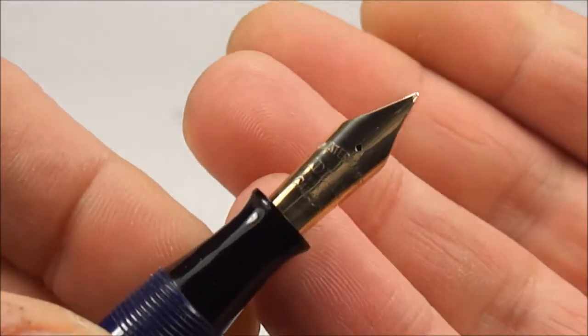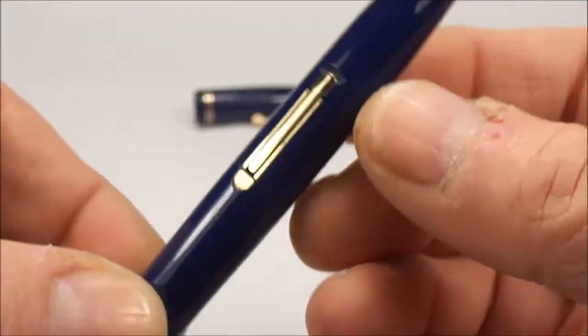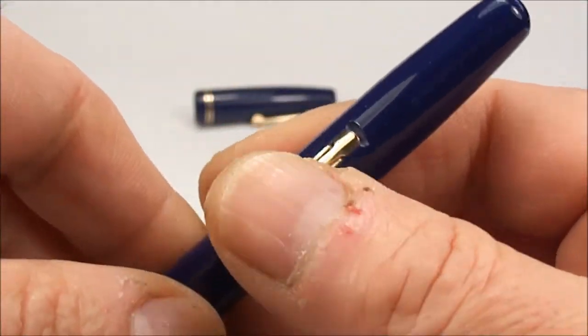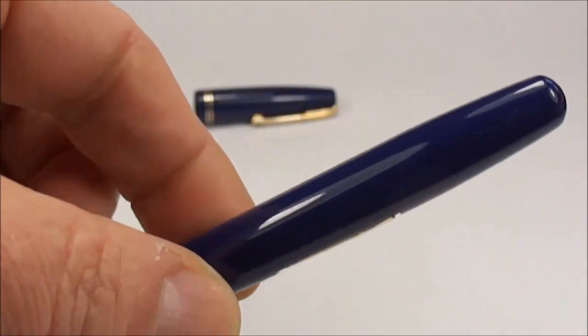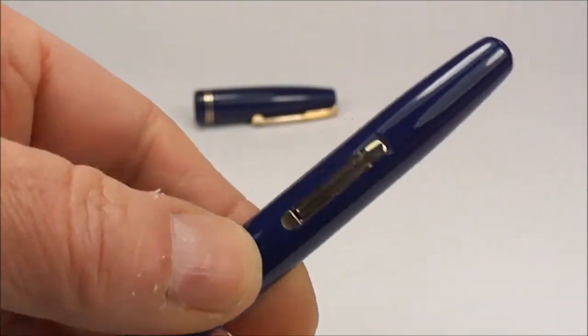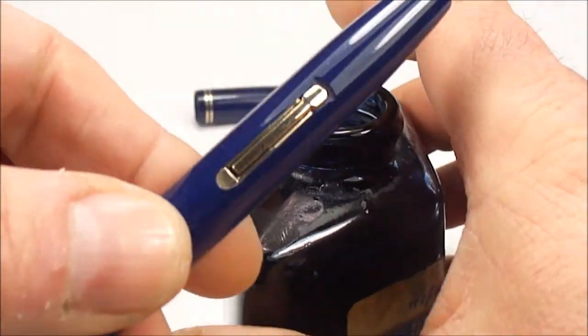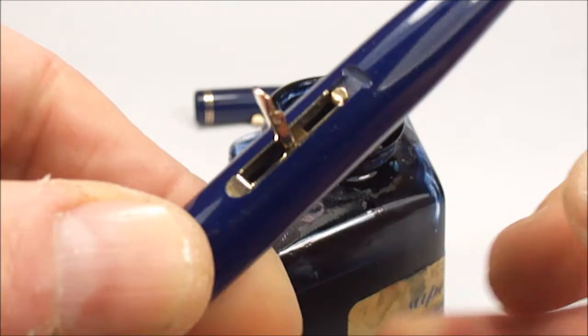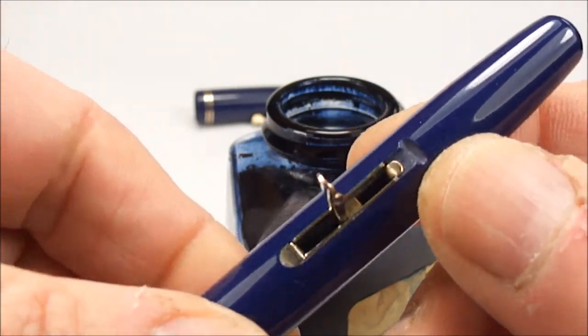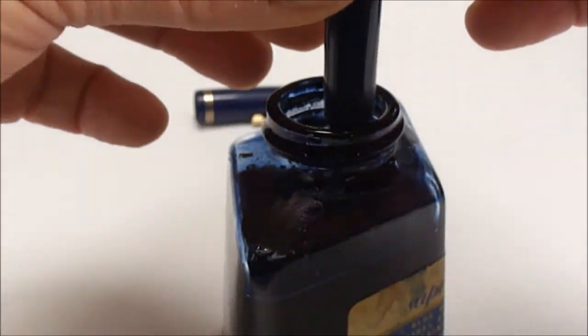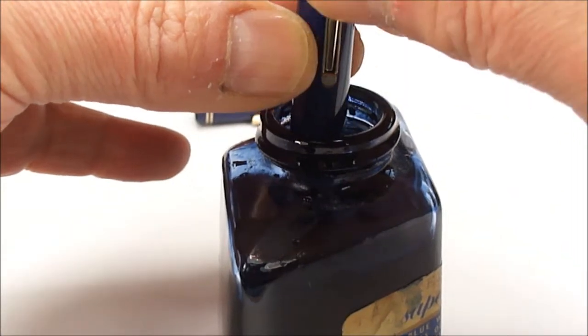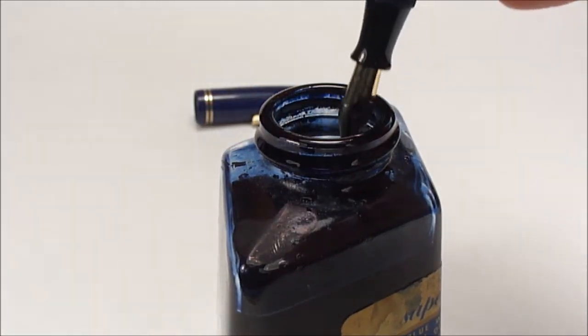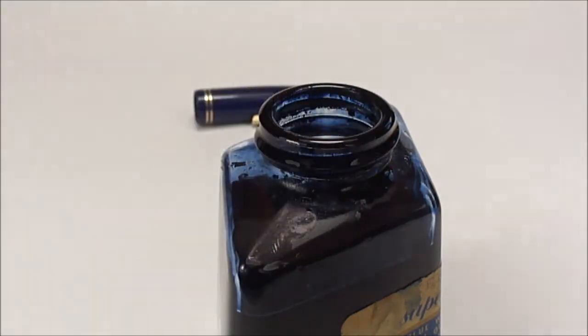As I said, it's a lever fill fountain pen made in this blue celluloid. We've fully serviced it, so it's as good a time as any to test it. What we do is get the lever, pull the lever up as far as it'll go, dip the nib in the ink, and pop the lever back into place. Just give it a shake and wipe it off with the tissue.